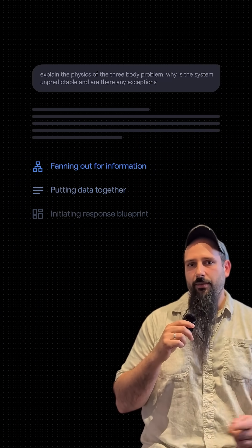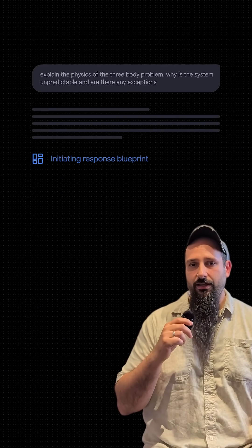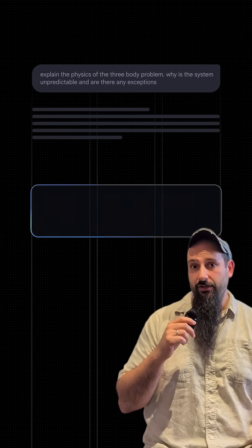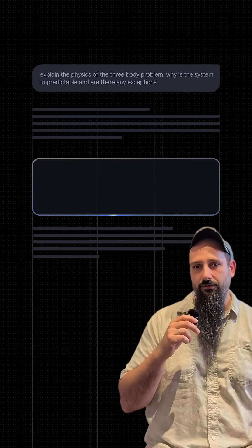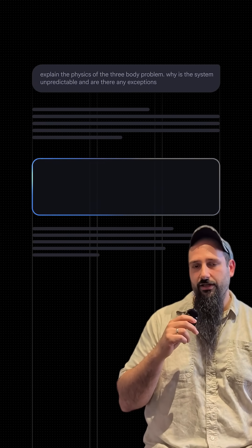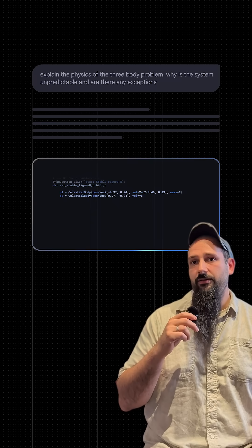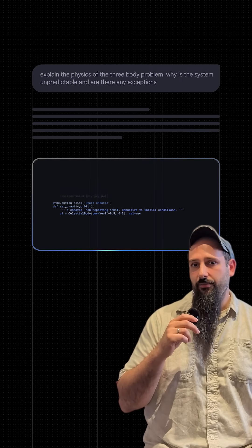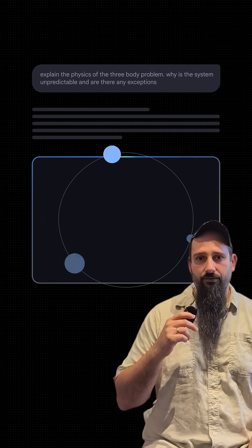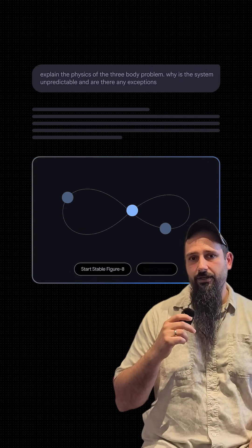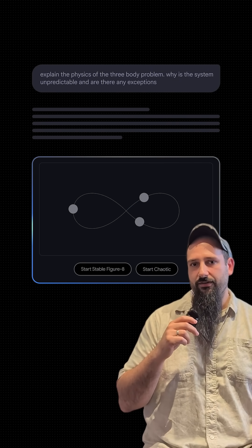From there, it will reason about any additional information it needs. It will generate a blueprint, which describes not only the content but also the layout of the page elements. And in certain cases, it will generate a completely bespoke UI element via a coding agent, which gives you an interactive tool or simulation that will really help you with comprehension of the concept.